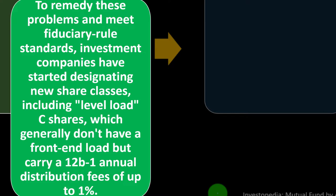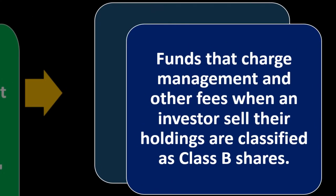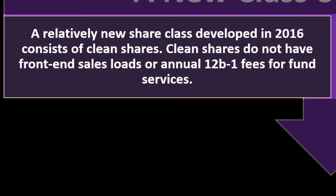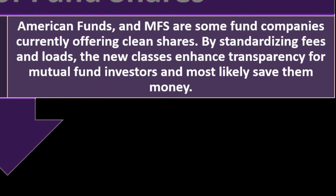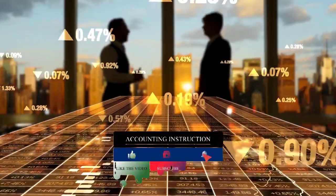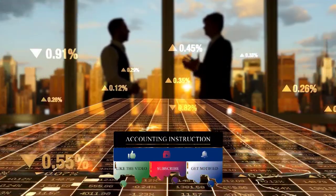C shares generally don't have a front-end load but carry a 12B-1 annual distribution fee of up to 1%. Funds that charge management and other fees when an investor sells their holdings are classified as Class B shares. A relatively new share class developed in 2016 consists of clean shares. Clean shares do not have front-end sales loads or annual 12B-1 fees for fund services. Companies like American Funds and MFS currently offer clean shares. By standardizing fees and loads, the new classes enhance transparency for mutual fund investors and most likely save them money.